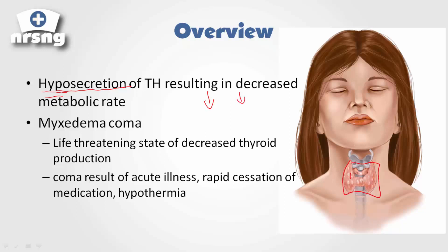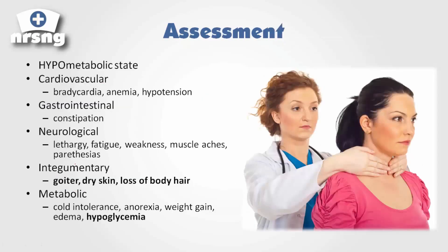We have hyposecretion, and what that can lead to is such a decrease in our metabolic state that it can actually lead to even a coma. Remember, we're talking metabolic state — a really easy way to remember that is myxedema coma. The coma is going to happen with the hyposecretion — it's an ultra-decrease in metabolic state.